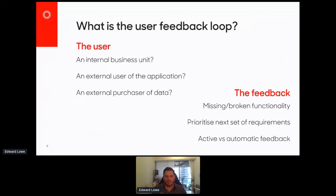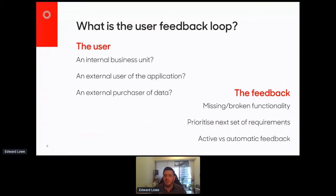Active feedback is where someone is actively giving it to you — whether that's someone from your own team, an external person, or a focus group. This is elicited feedback where someone says something specific. But there's also a lot of opportunity to get automatic feedback through data collection — seeing how people are actually using the system. We'll come back to that one a little bit later.